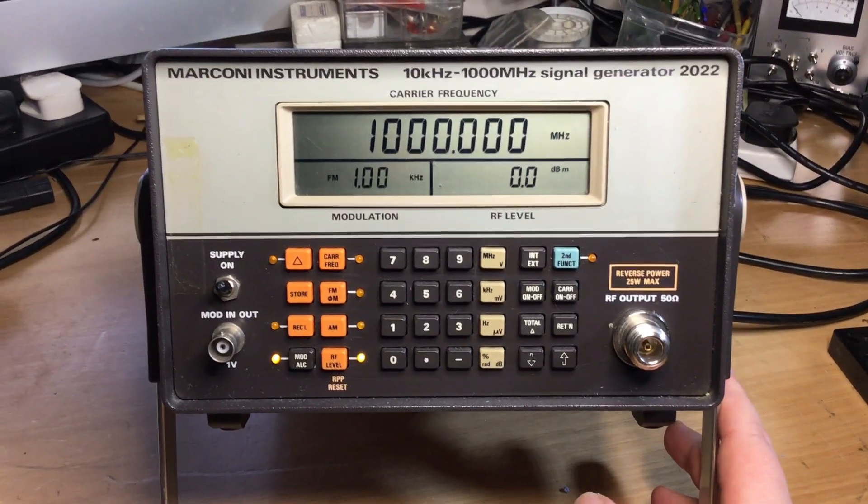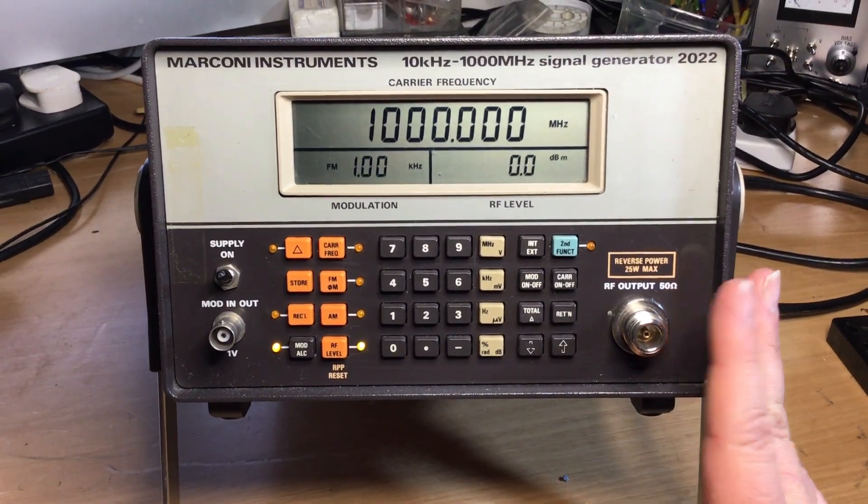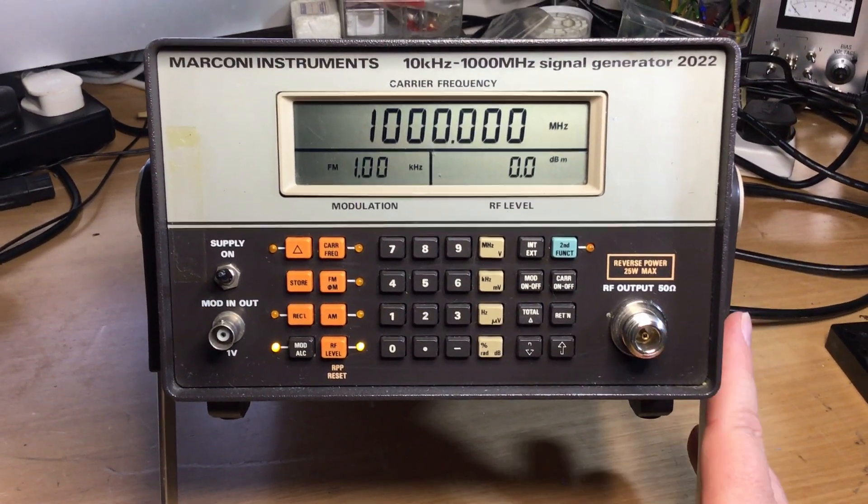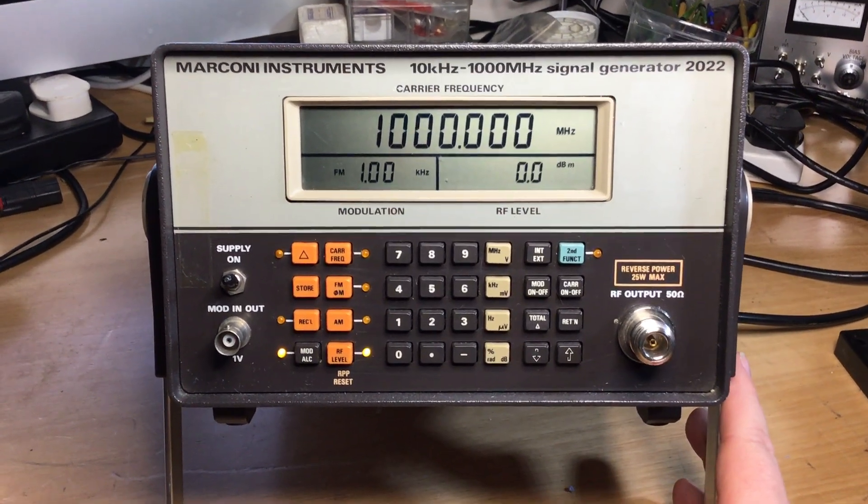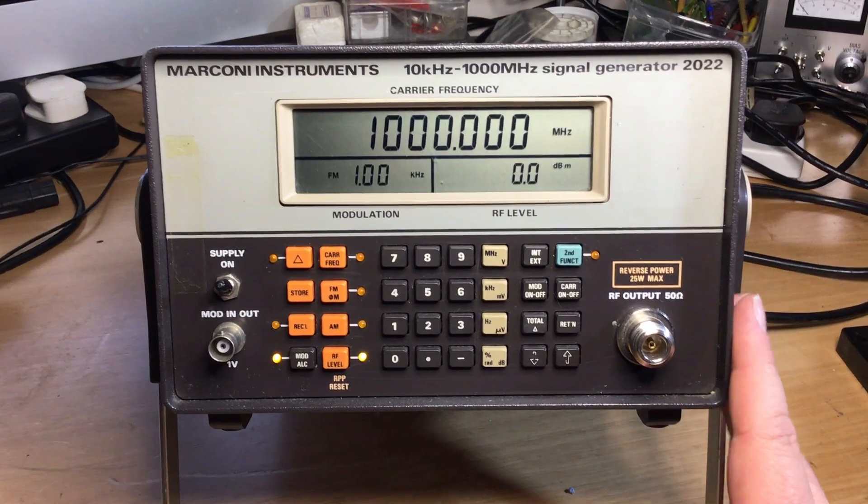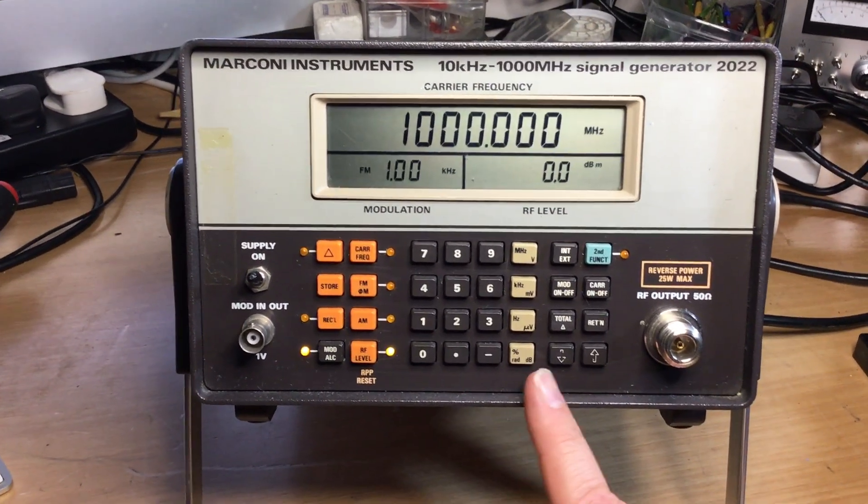This signal generator is very much like the Marconi 2955. It shares most of the same working innards as the 2955A radio test sets, as far as the componentry is concerned.